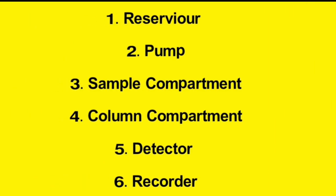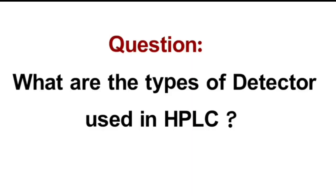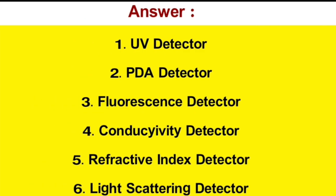Question: What are the components of HPLC? Answer: Reservoir, pump, sample compartment, column compartment, detector and recorder. Question: What are the types of detector used in HPLC? Answer: UV detector, PDA detector, fluorescence detector, conductivity detector, refractive index detector, and light scattering detector.